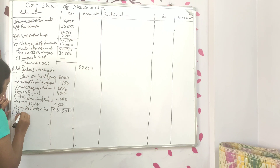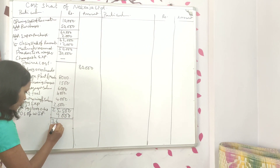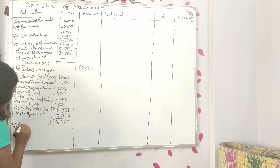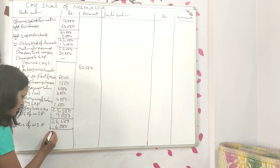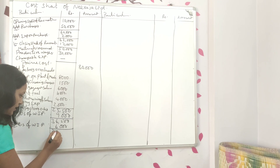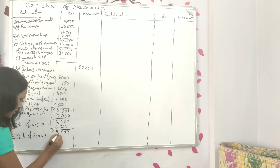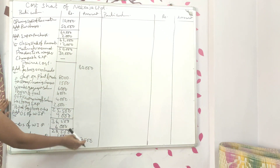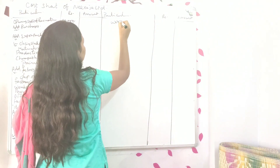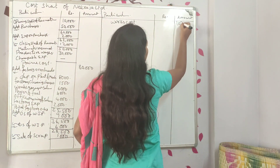Is there any opening stock of work in progress? Yes — Rupees 9,000. That gives a balance of 34,500. Less closing stock of work in progress of Rupees 6,000 — balance is 28,500. Less sale of scrap of Rupees 1,000 — total works cost is 27,500. Adding this to prime cost of 80,000 gives 1,07,500.